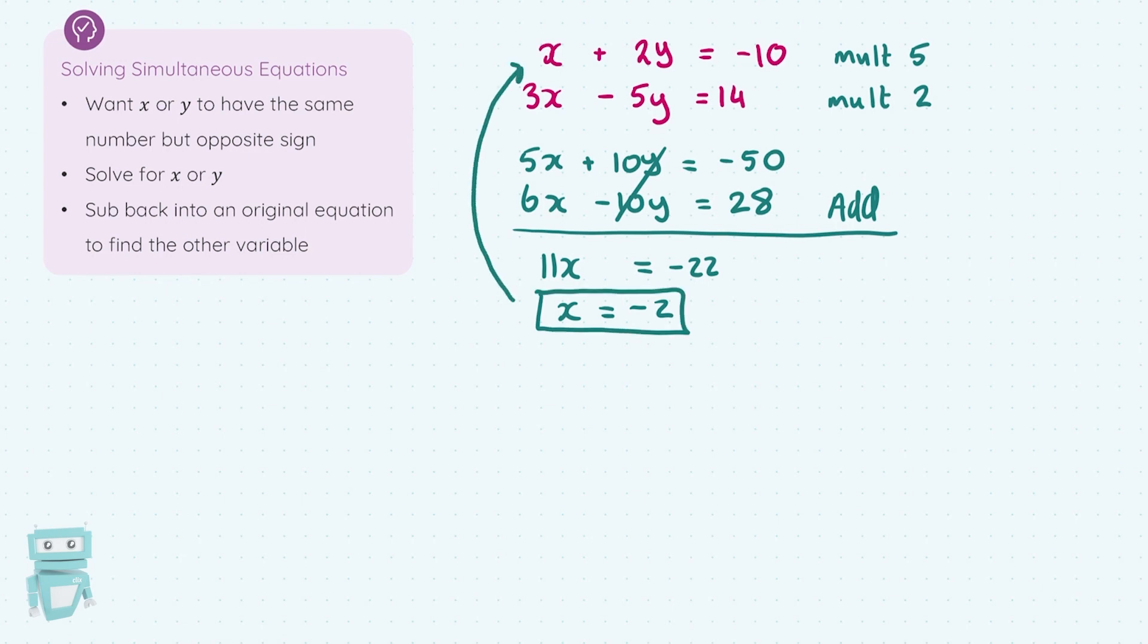And what I'm going to do from here is take this value for x, move on to step 3 and sub back into an original equation to find the other variable. Let's just sub into the first one. So it's x, which is minus 2, plus 2y equals minus 10. And from here, I'm just going to solve for y, as per usual in a normal linear equation. And there I get y equals minus 4. So my answers here are x is minus 2 and y is minus 4.